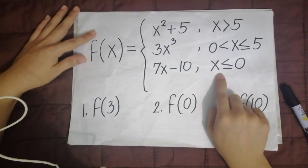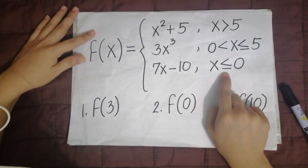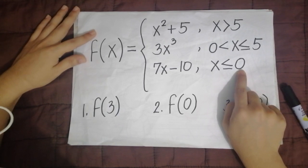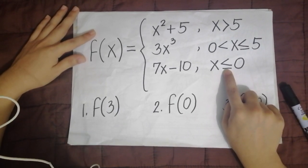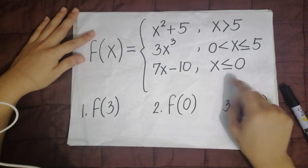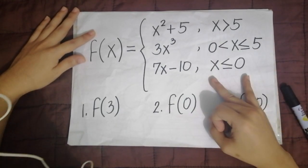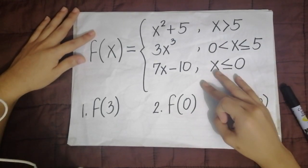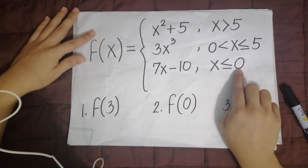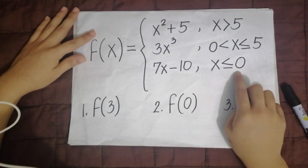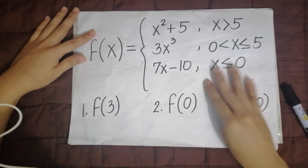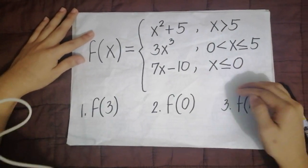And this one is x is less than or equal to 0. Less than means lower than 0, so the numbers lower than 0 are negative 1, negative 2, negative 3, negative 4. And since there is an equal sign here, 0 is included as well. So you start with 0, negative 1, negative 2, negative 3, negative 4, going further down.